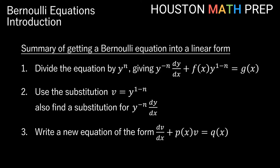To summarize how to solve a Bernoulli equation: first, divide by y to whatever power appears on the right side, giving y to the negative n in front of the dy/dx term. Your substitution for v appears right next to your function of x, leaving only a function of x on the right side. Substitute v equals y to the 1 minus n, find the substitution for dy/dx in terms of dv/dx, then form the new linear equation: dv/dx plus some function of x times v equals some other function of x. Remember to put it in normal form before finding the integrating factor. We've got Bernoulli equation examples coming up in the next video — thanks for watching!